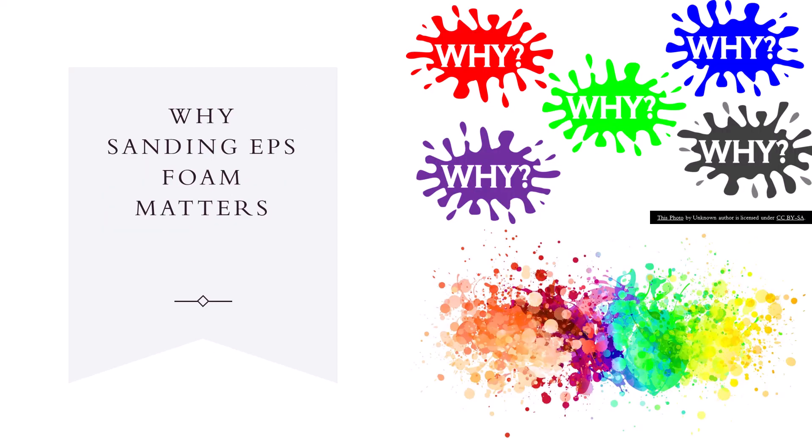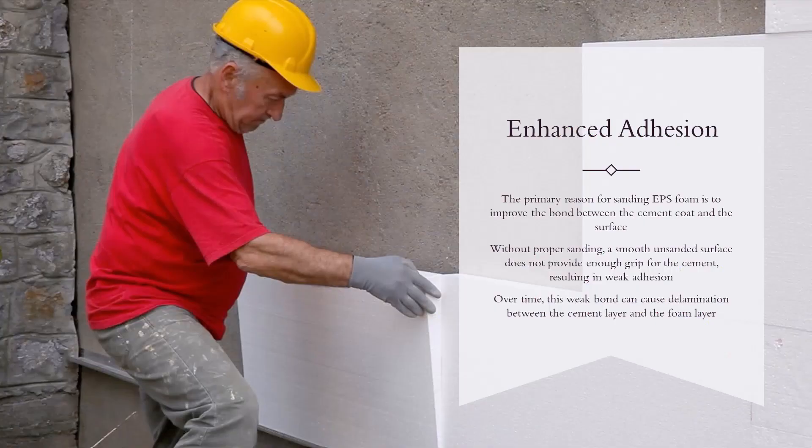The primary reason for sanding EPS foam is to improve the bond between the cement coat and the surface. Without proper sanding, a smooth, unsanded surface does not provide enough grip for the cement, resulting in weak adhesion. Over time, this weak bond can cause delamination between the cement layer and the foam layer.